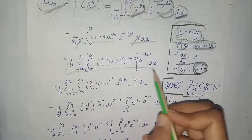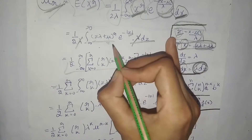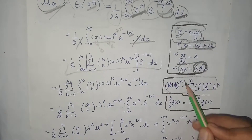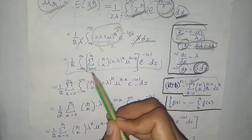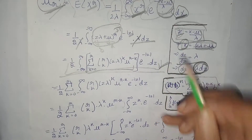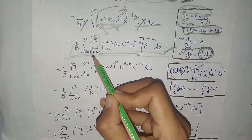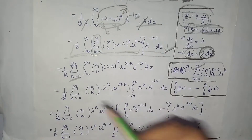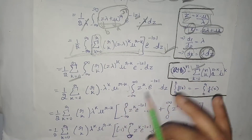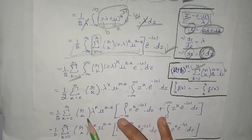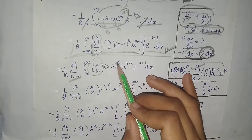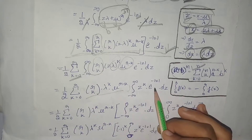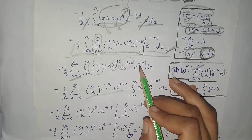After simplification, we obtain this expression. If we consider the terms as a, b, and n and apply the binomial expansion formula, we get this result. We take the summation outside the integration. Since the integration is with respect to z, terms that do not contain z — specifically λ raised to power k and the combinatorial term — can be written outside the integration. Inside the integration, we write z raised to power k times e raised to power minus |z|.